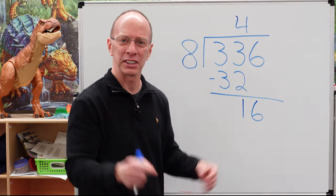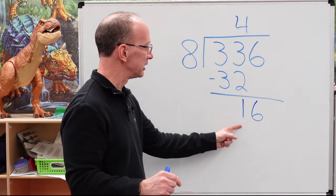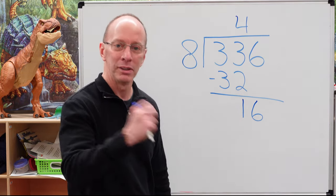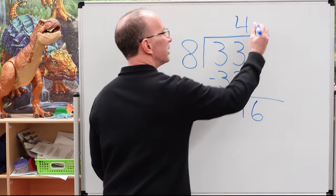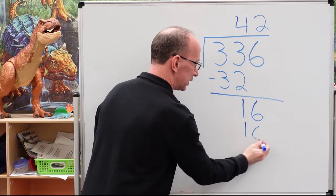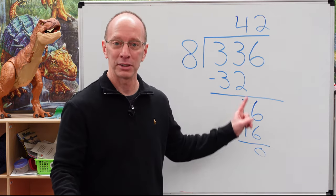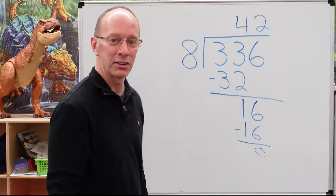Now I got to bring the other number down. So I'm going to bring six right here. How many times can I put eight into 16? Two. Eight times two, 16. So we put the two right here. Two times eight is 16 with a remainder of zero. Don't need to put that zero in there. Ready to do another one? Yeah, let's do it.